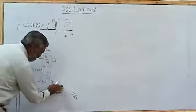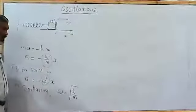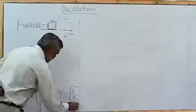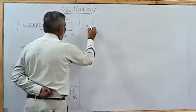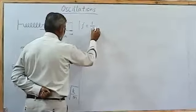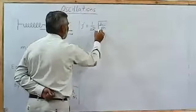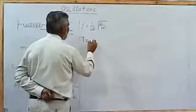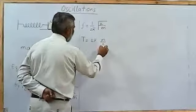So, ω is obviously √(K/M). And therefore, a similar expression can be derived. Frequency is 1/(2π)√(K/M), and therefore the period of this oscillation is 2π√(M/K).